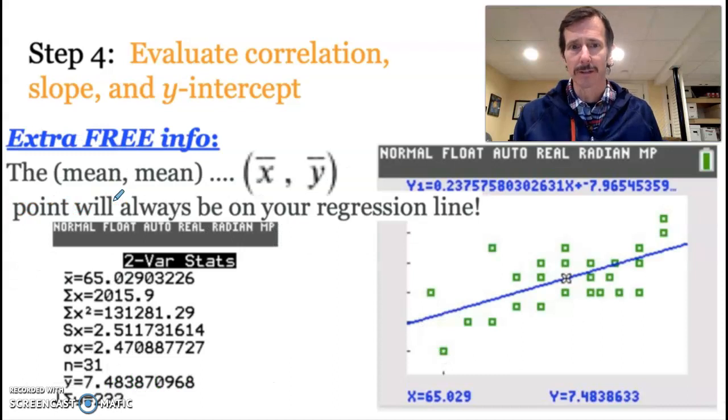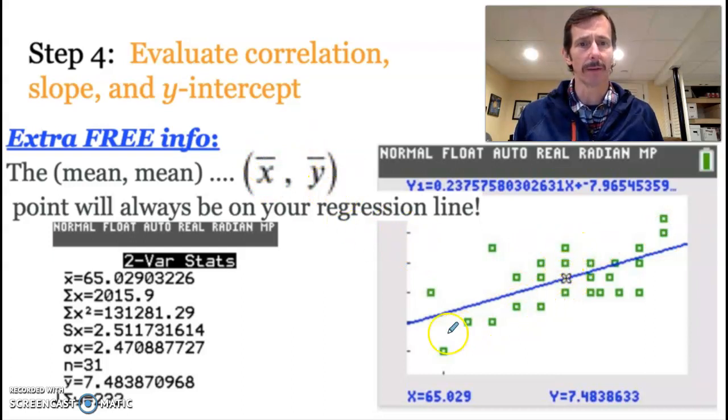All right. So here is an additional free piece of information that you can do with what you want. But if you have a regression line, and this is our regression line, the actual mean of your x variable and the mean of your y variable will actually be a point on that regression line every single time. So this is our heights, and this is our shoe size. And so if I averaged all those females' heights and all of those females' shoe sizes, that point would actually be right on top of your regression line.